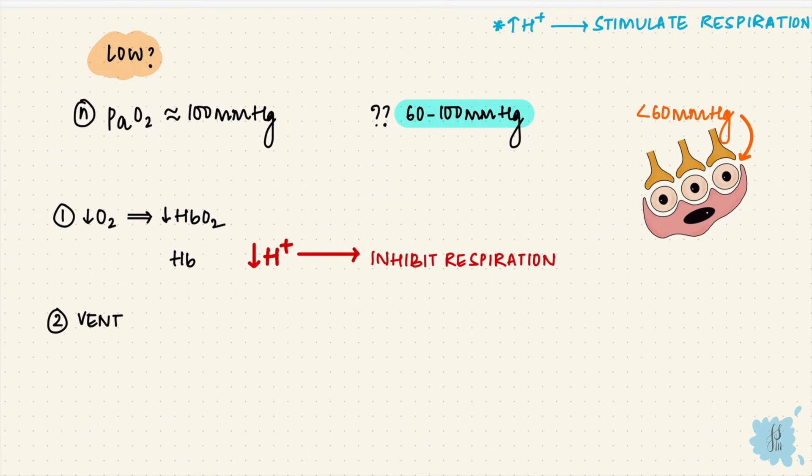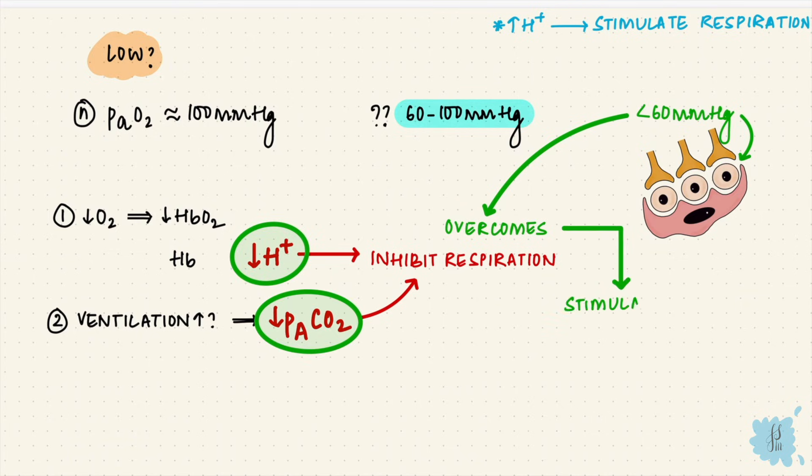Even if the ventilation were to increase, there's more carbon dioxide being breathed out. That lowers the alveolar carbon dioxide, again inhibiting respiration. So there are two blockers inhibiting respiration until the oxygen goes below 60. That's when this stimulus becomes stronger than these two inhibitory stimuli, increasing respiration.